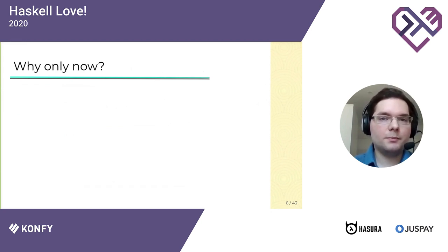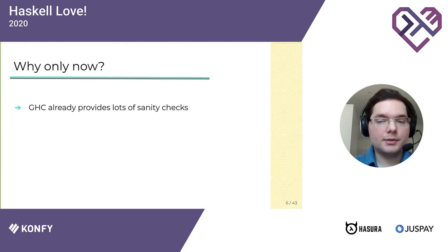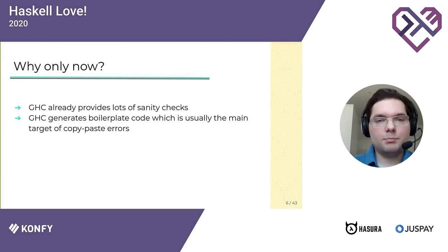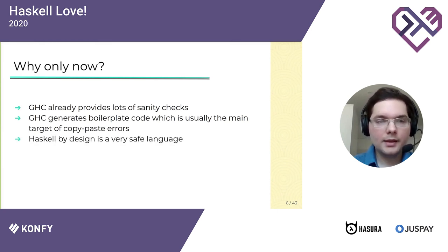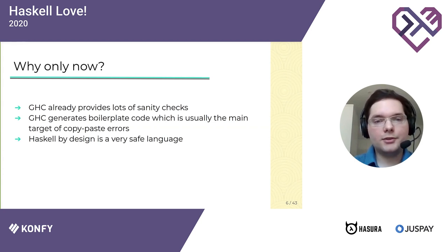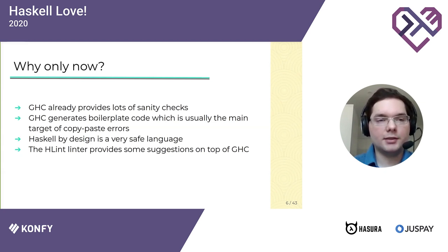Haskell didn't have a true static analyzer before as a separate tool, so the question is: why only now? First, GHC already provides lots of sanity checks such as pattern match exhaustiveness checking and unused variables. Second, GHC generates a lot of boilerplate code for you — it has a powerful deriving mechanism which saves a lot of keystrokes, and boilerplate code is usually where you have copy-paste errors. Also Haskell itself by design is a very safe language — it doesn't have implicit casts or manual memory management, and static types eliminate several classes of errors. There are also other static analyzers such as HLint which fill some gaps, so there wasn't such an urgent need to write a static analyzer.